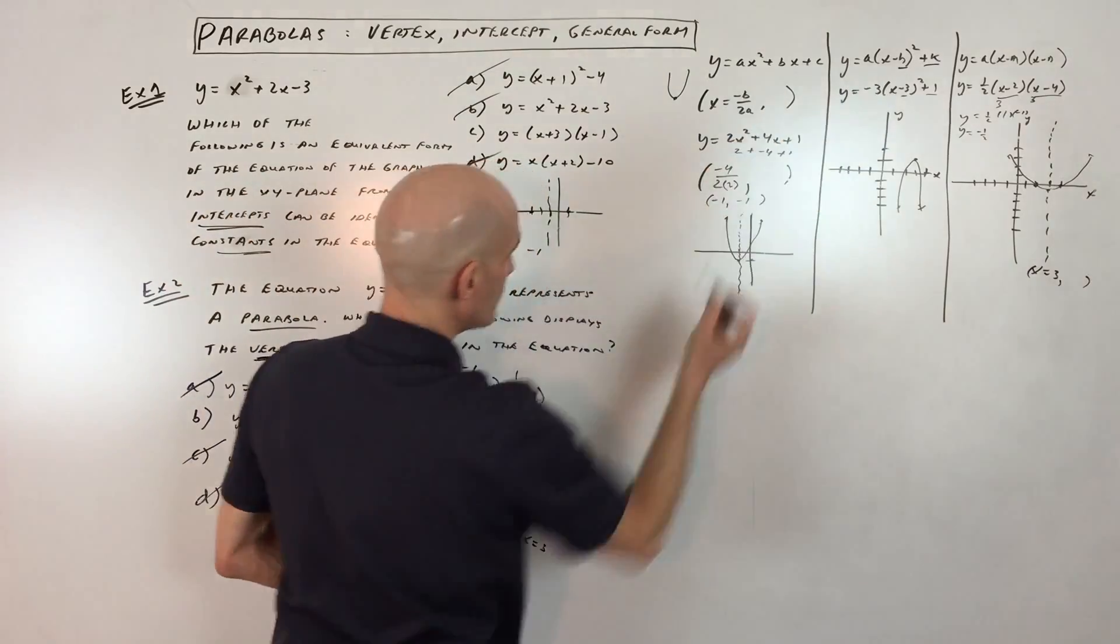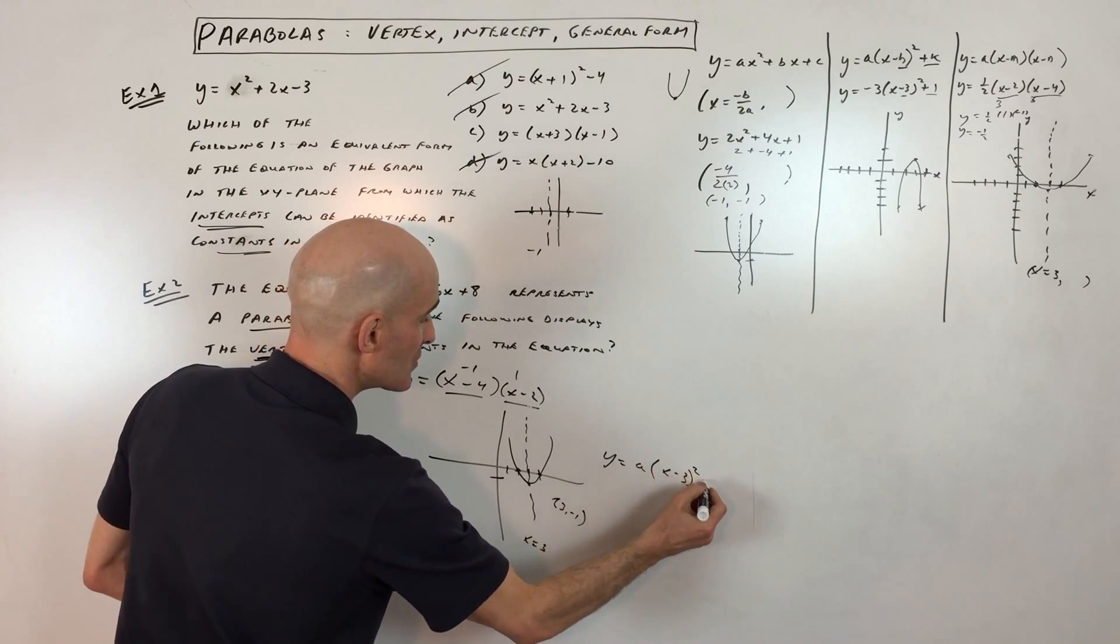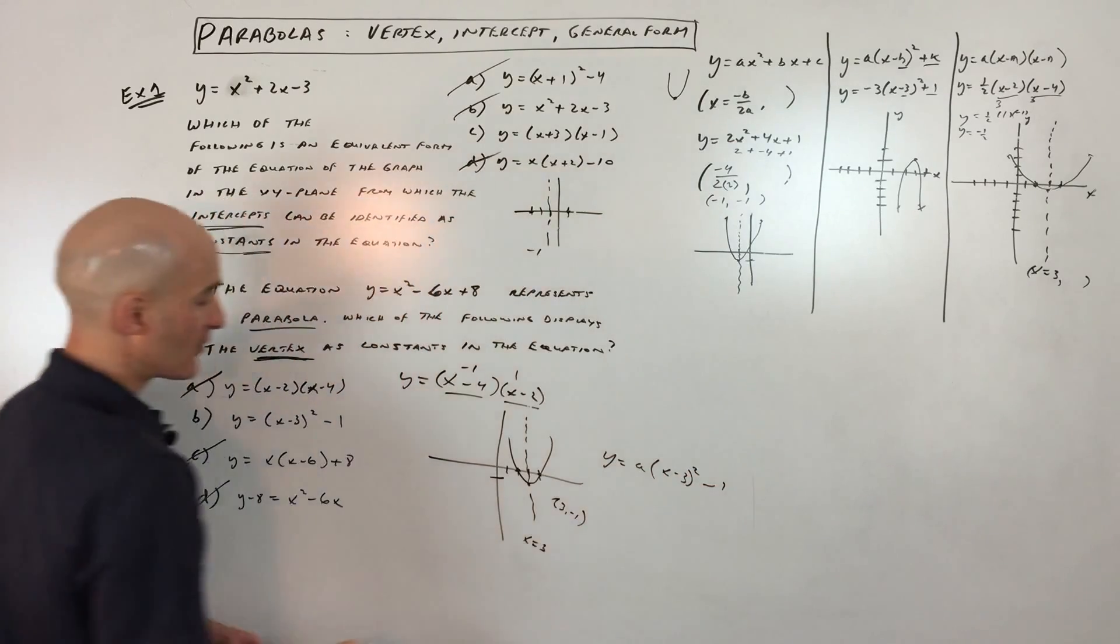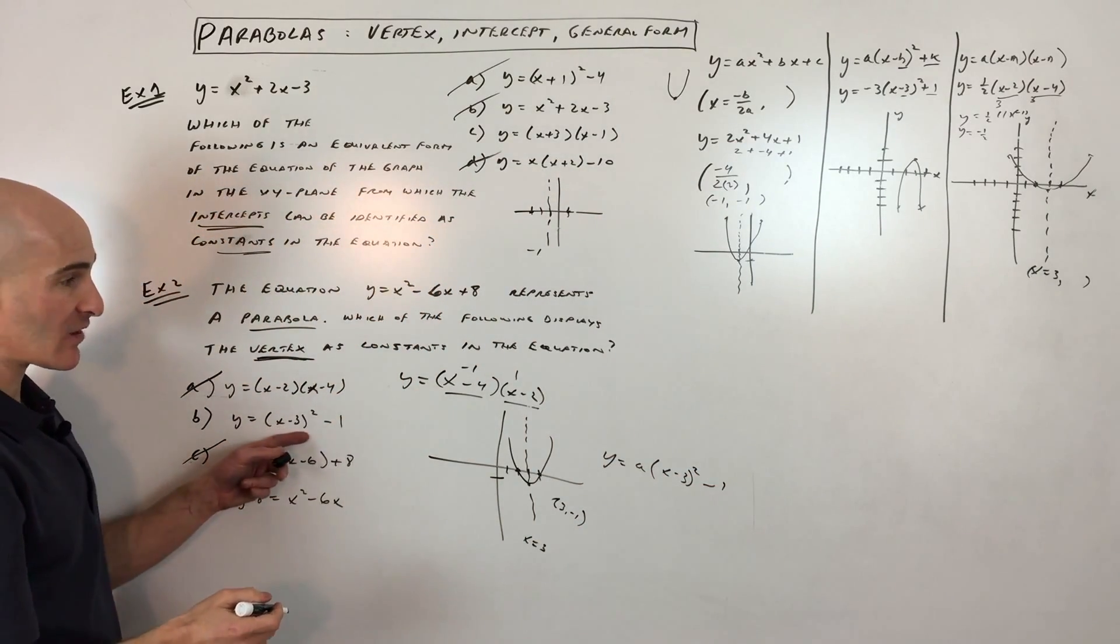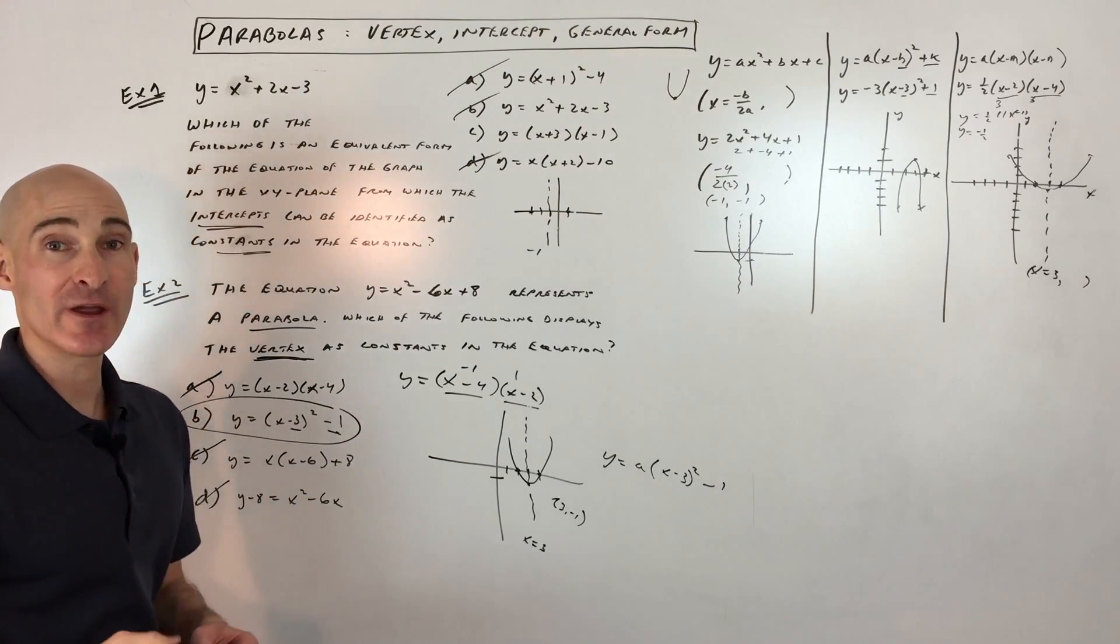So if we use the vertex form, you can see it's going to be y equals a, x minus 3 squared, minus 1, right? So it looks like this is in that correct form. You can see the vertex is at 3 negative 1. So letter B is going to be your best answer there.